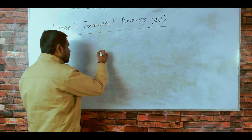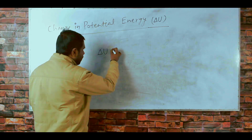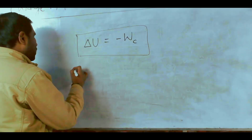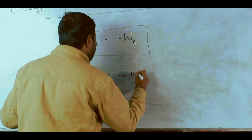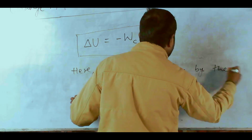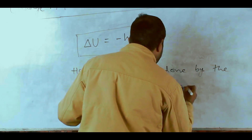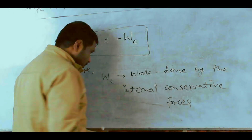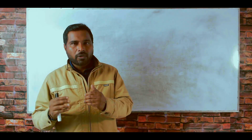So, the change in potential energy of a system, delta U, will be equal to minus W_conservative, where W_C is the work done by the internal conservative forces. Now I will try to elaborate on this definition.